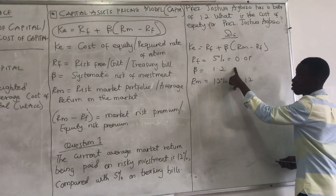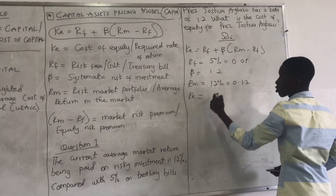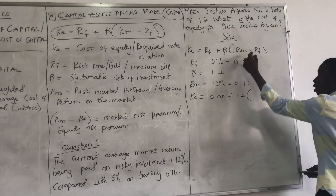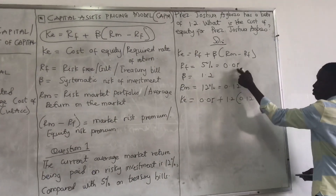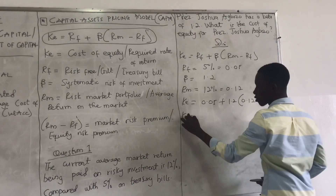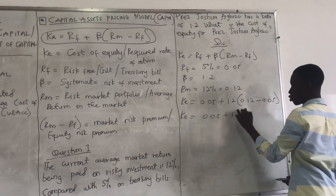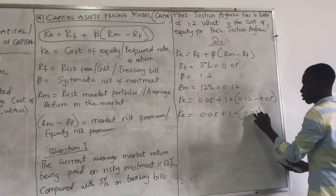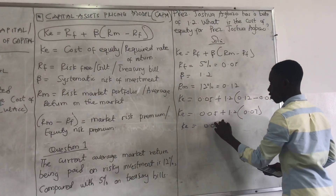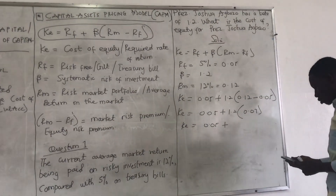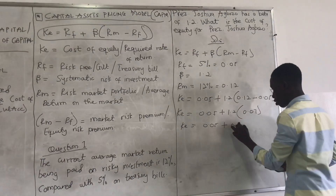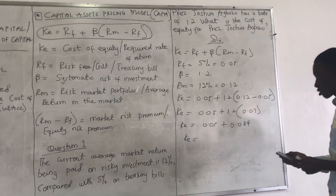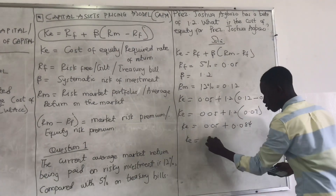Now let's substitute the information into the equation. K = 0.05 + 1.2 × (0.12 − 0.05). Solving the bracket first: 0.12 − 0.05 = 0.07. So K = 0.05 + 1.2 × 0.07 = 0.05 + 0.084 = 0.134.